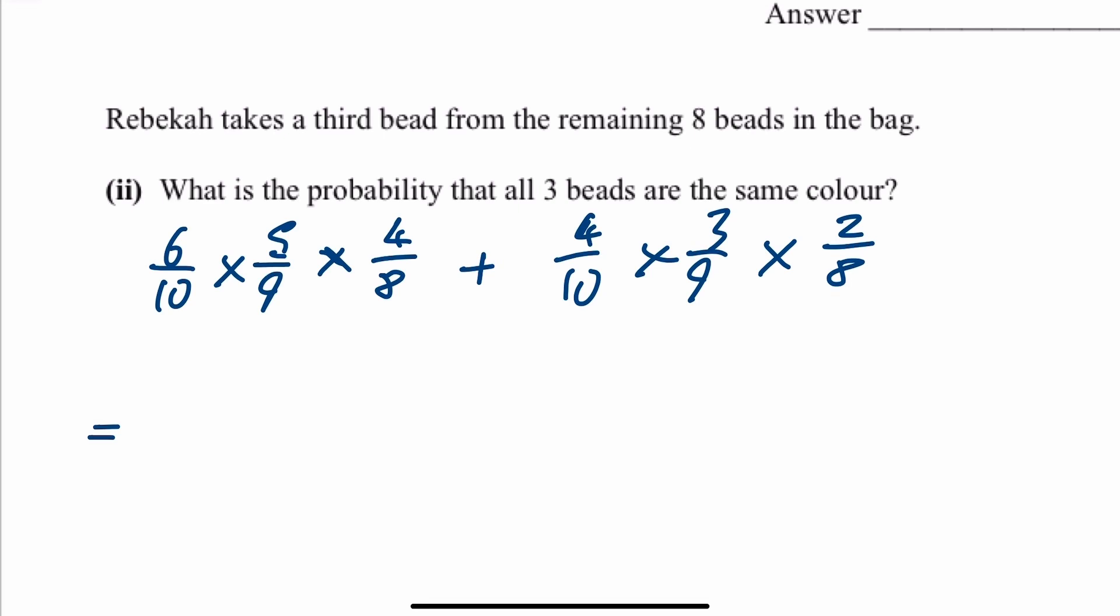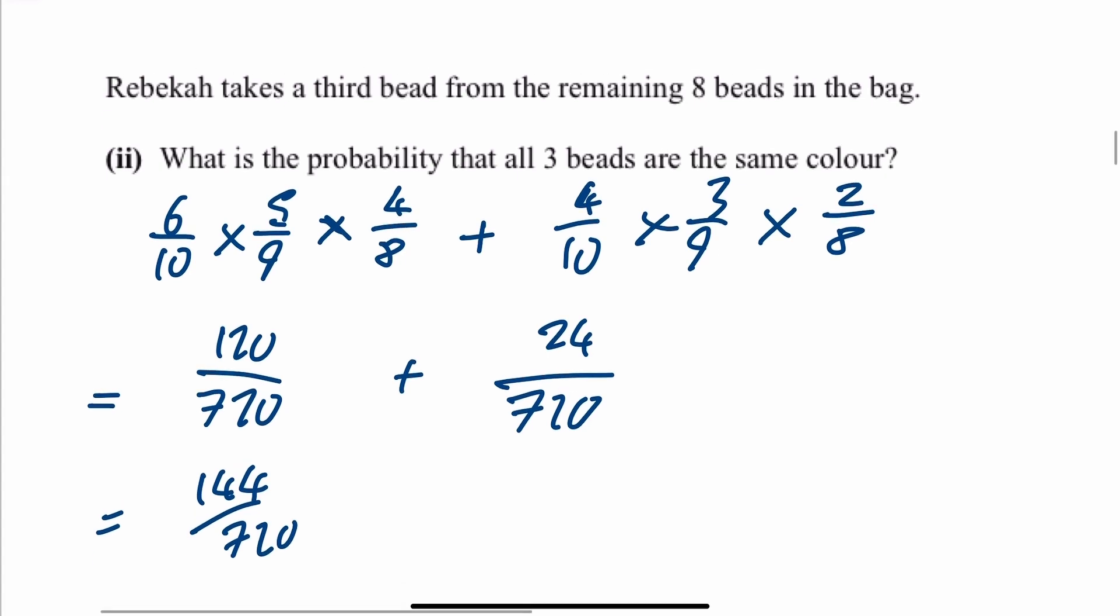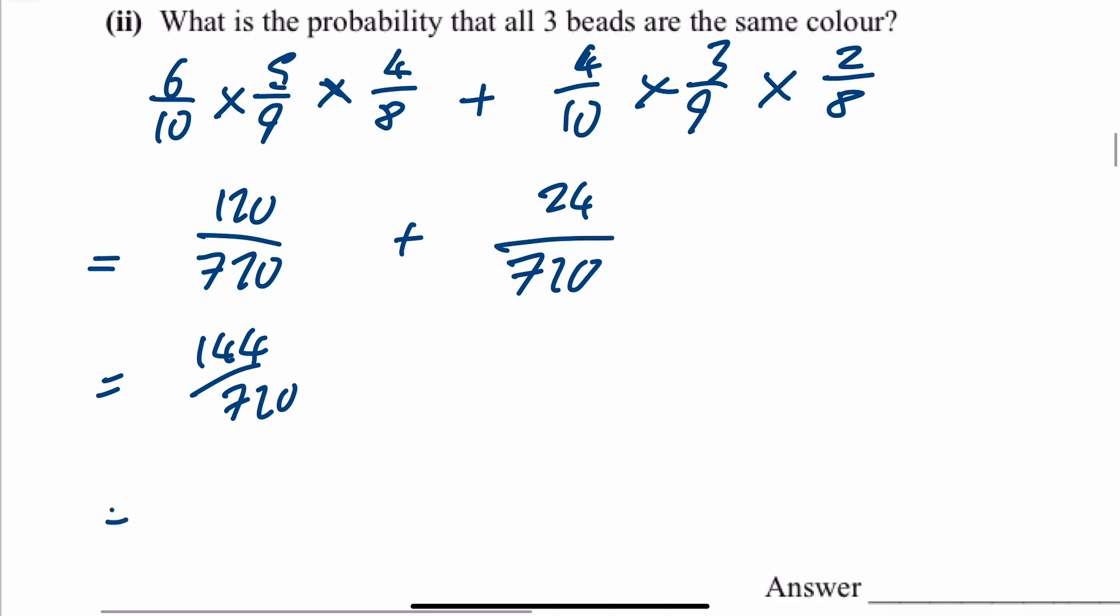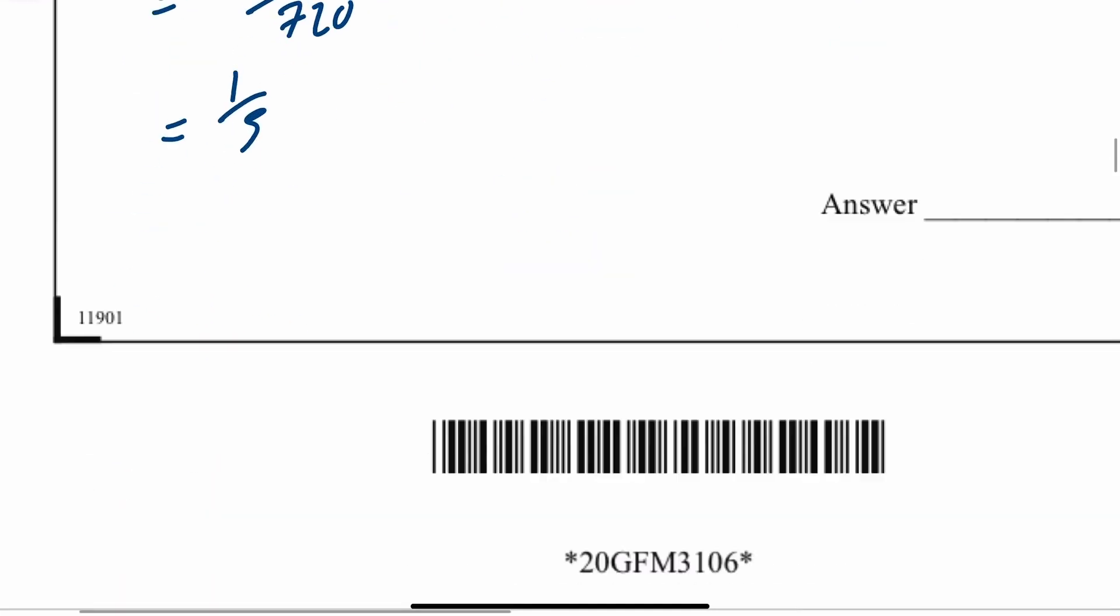I'll just work out what the denominators are going to be. Both denominators are going to be the same. So you've got 10 times 9 times 8. So they're both going to be over 720. And then you had 6 times 5 times 4, which works out to be 120. And the other one was 4 times 3 times 2, which is 24. So what you've got overall is 144 over 720. I'll just use my calculator this time. And that works out really nicely to be 1 fifth.